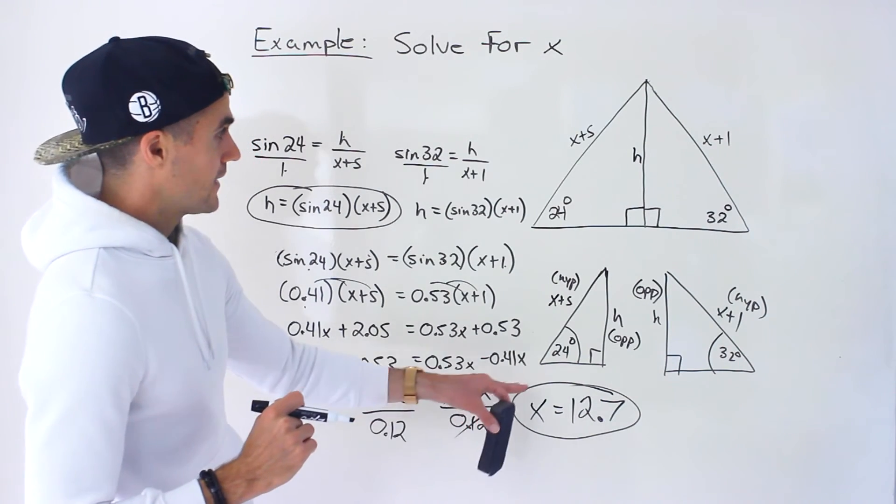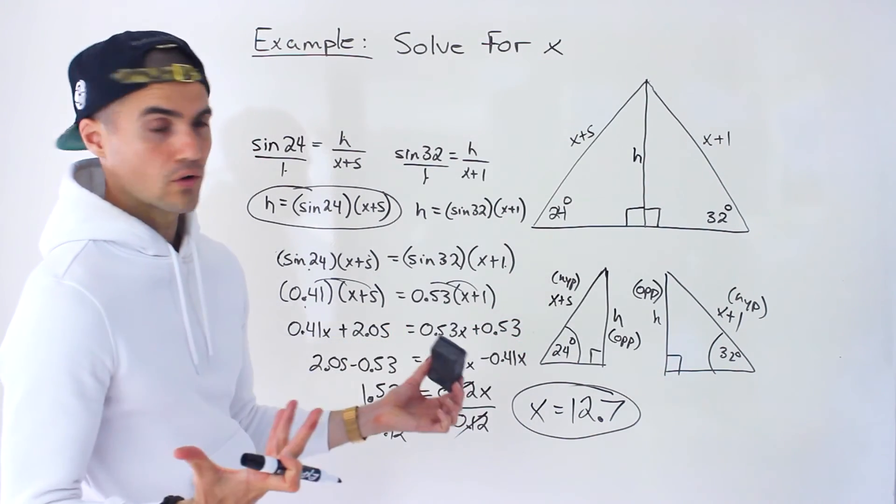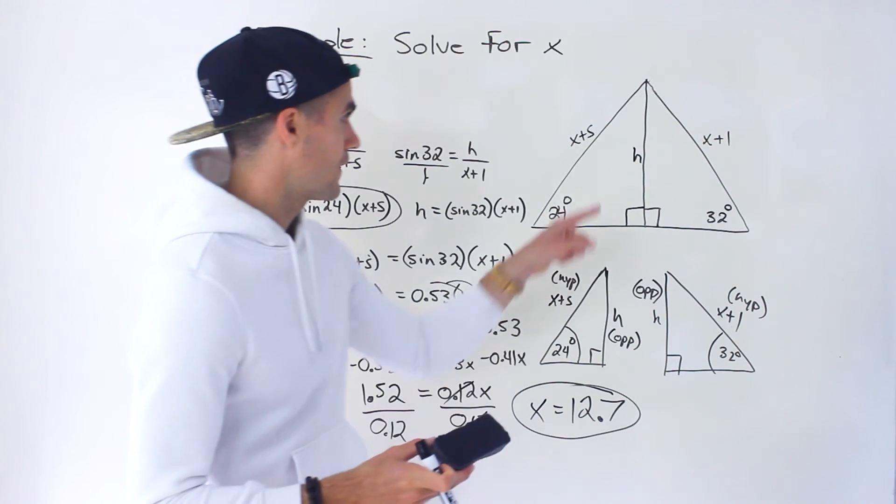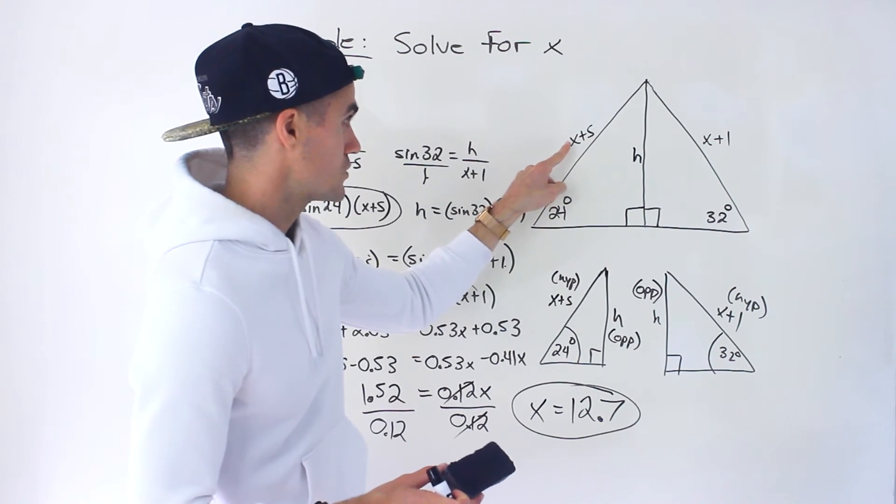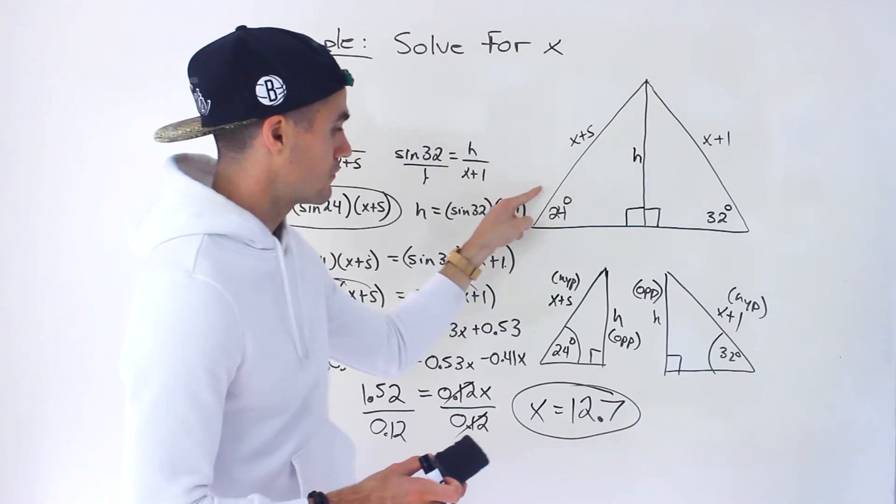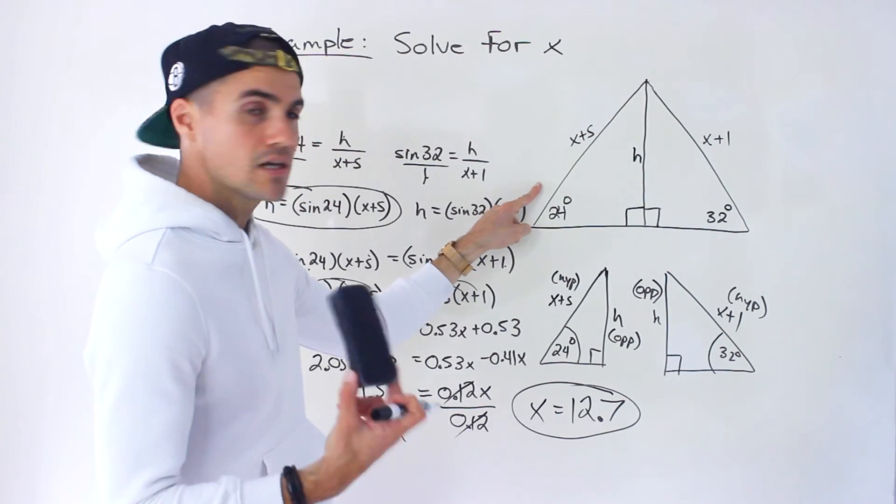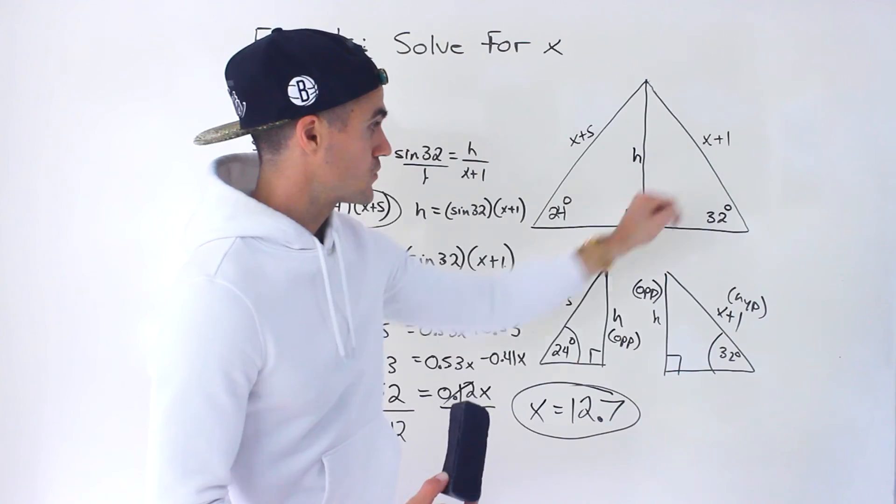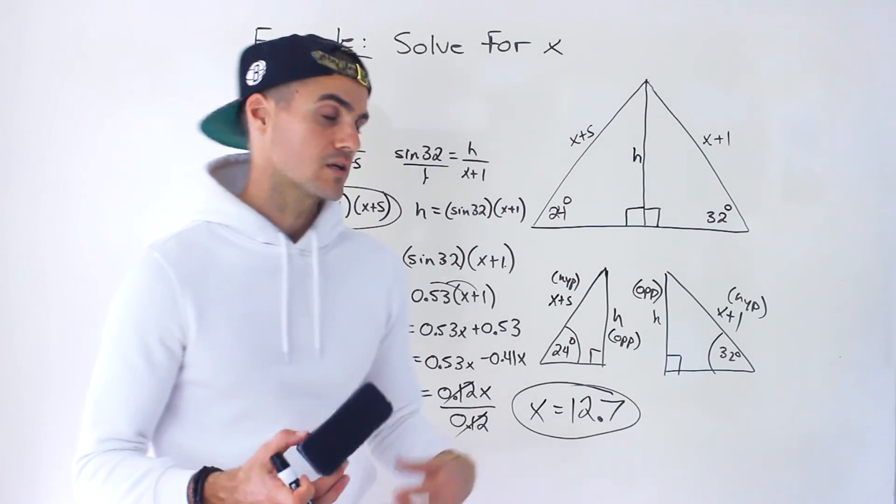So that ends up being the solution for this question. This x value here would be 12.7. So it'd be 12.7 plus 5, so the length of this side would be 17.7. x plus 1, the length of that side would be 13.7.